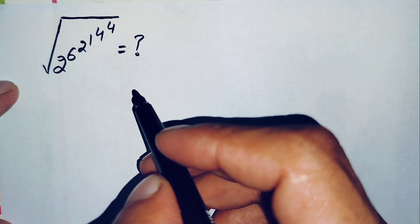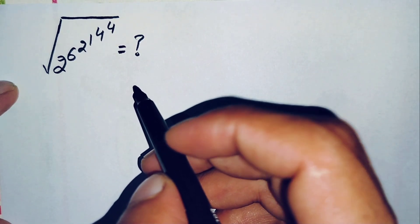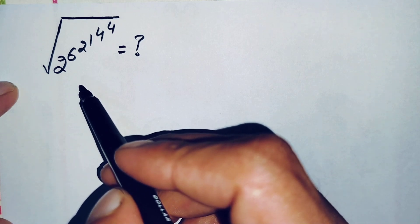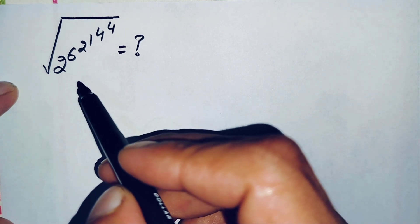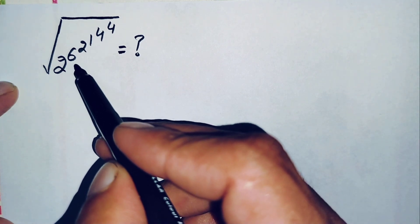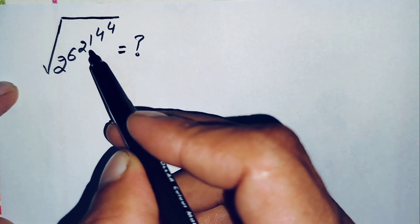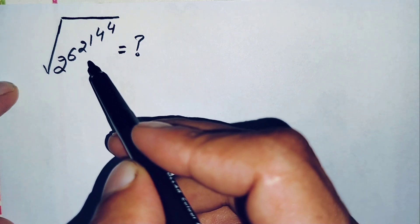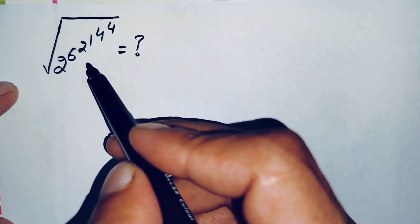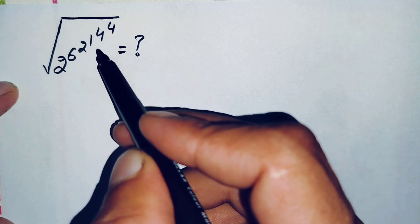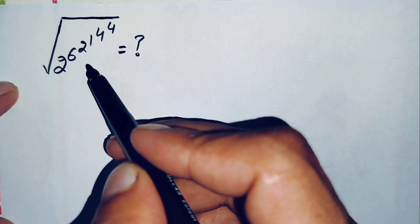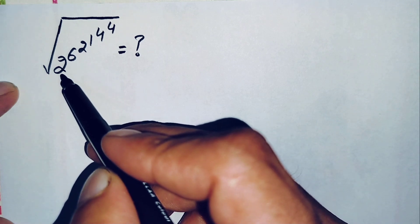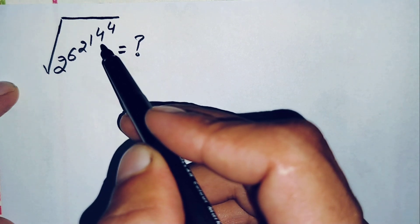Hello everyone, welcome back to Math Explorer. Today we will solve and find the value of an interesting square root math problem: the square root of 2 raised to power 6, raised to power 2, raised to power 1, raised to power 4, raised to power 4. This is a very interesting problem because the final value will be 262,144.